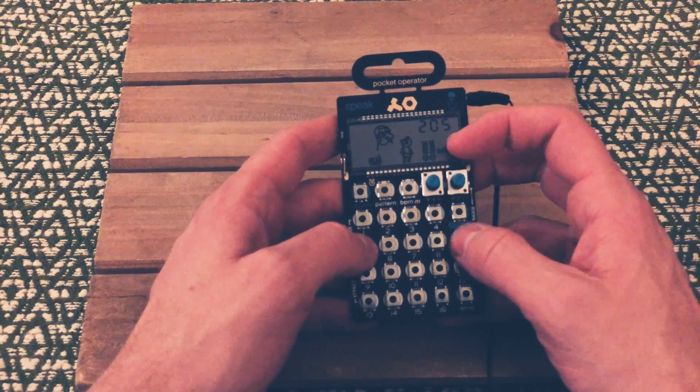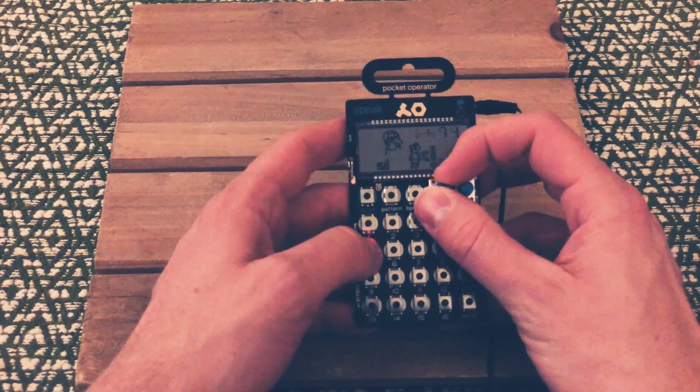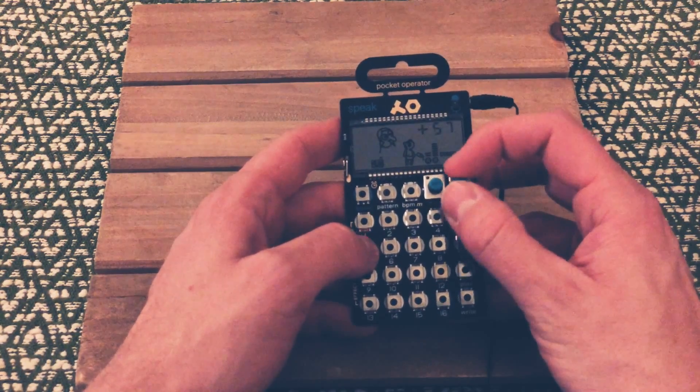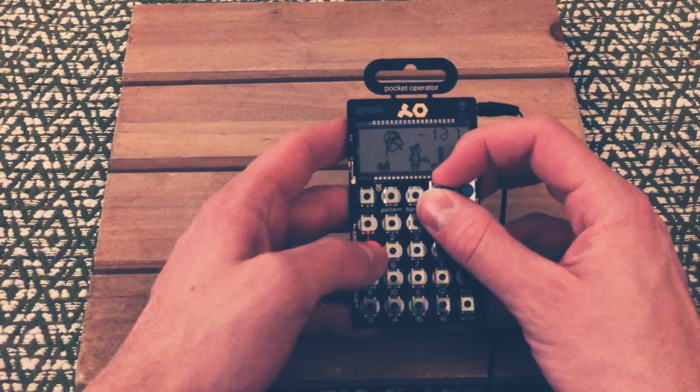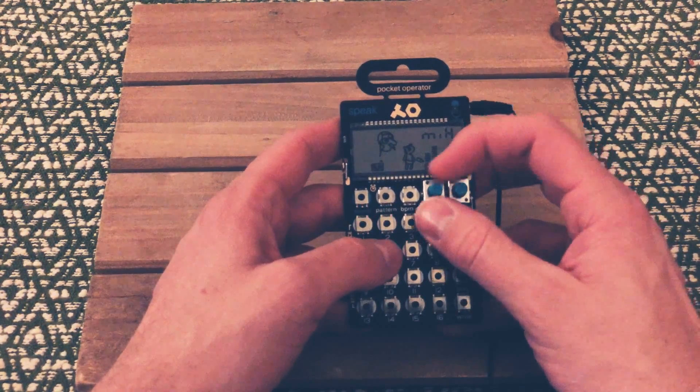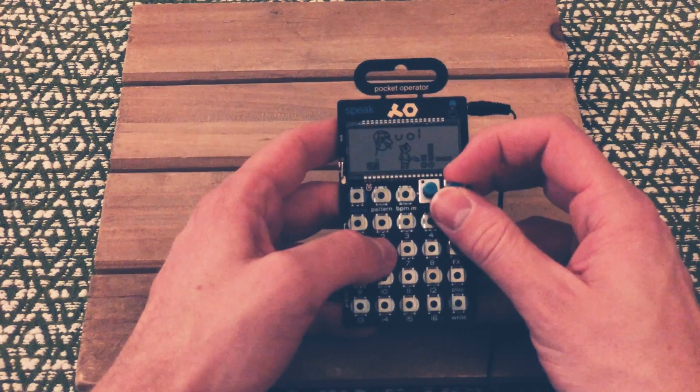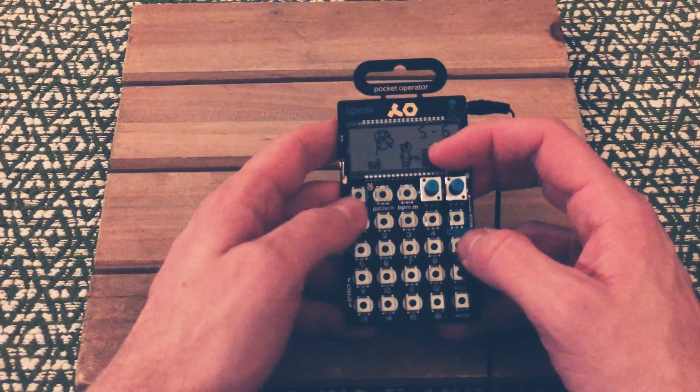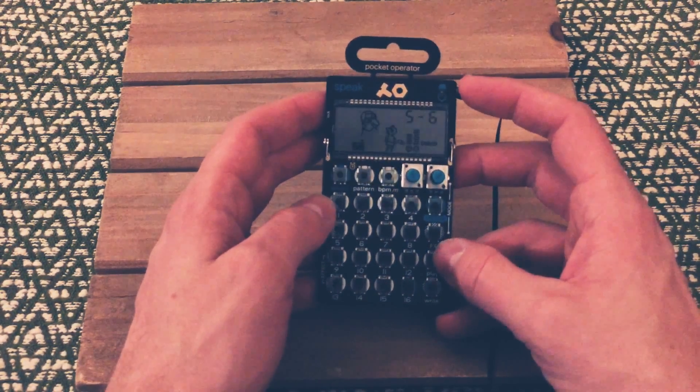And then it also does the BPM, or you do the pitch and the formant. And then you can do the noise, so the breath, and the volume. Those are the secret features of the PO-35 Speak.